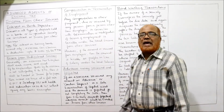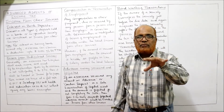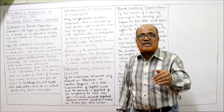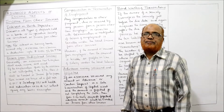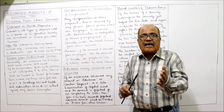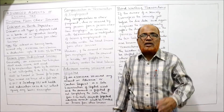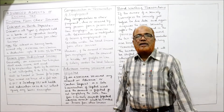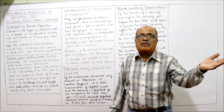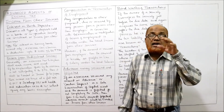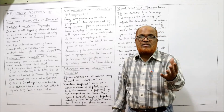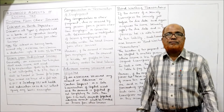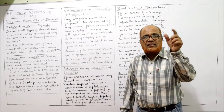Next is compensation on termination of employment. If a person at the time of termination or modification of employment is getting some compensation from any person other than the employer, that compensation received from any other person is taxable under income from other sources. However, if the compensation is given on termination or modification of service by the employer, it is taxable under income from salary — specifically under 'profit in lieu of salary.'